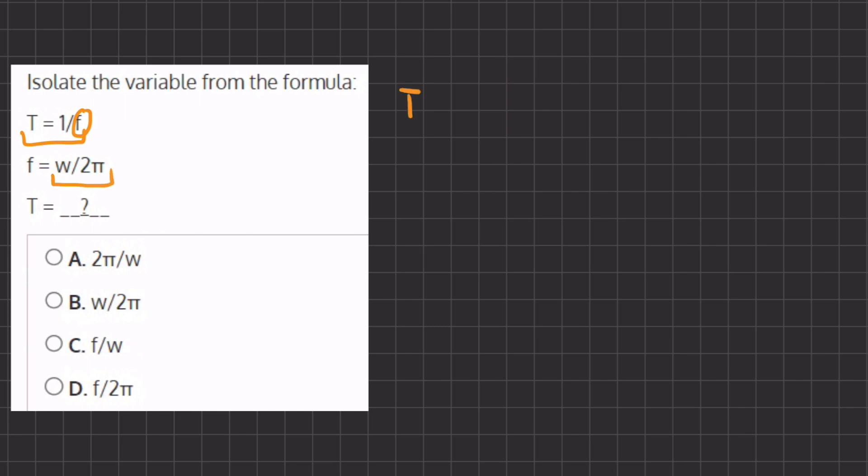So if we substitute it, we have t equals 1 divided by w divided by 2 pi.